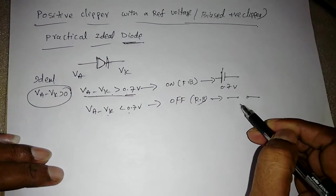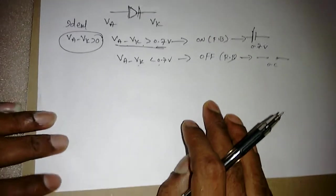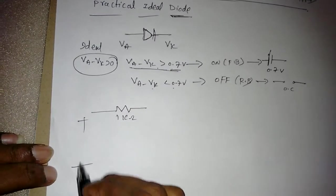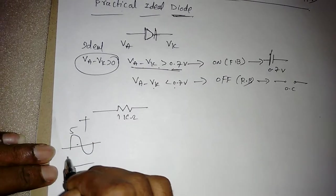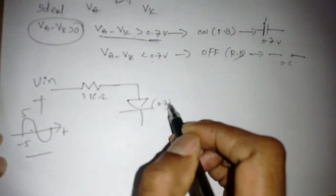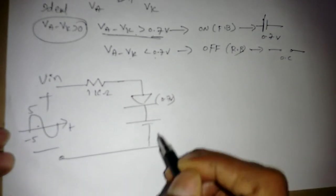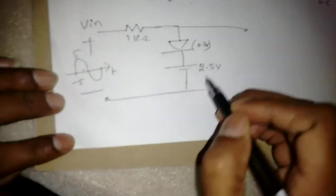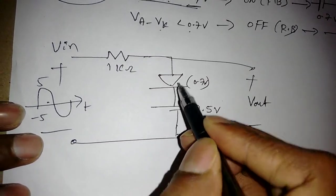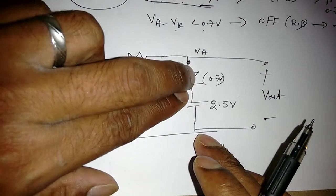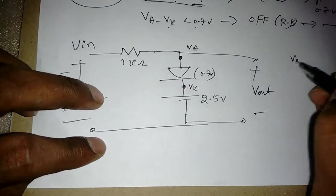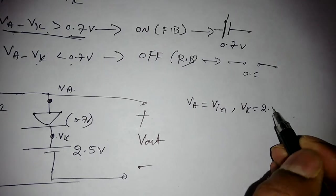The equivalent model for reverse bias will be simply open circuit. Now we will see the positive clipper with a positive reference. We take a 1 kΩ resistor, apply a sinusoidal signal of 5V to -5V as Vin, with a practical diode of 0.7V. In this case I will take 2.5V as the reference. To find VA, open the diode — VA is connected to Vin. To find VK, it is directly 2.5V. So VA equals Vin and VK equals 2.5V.